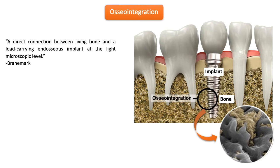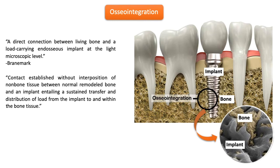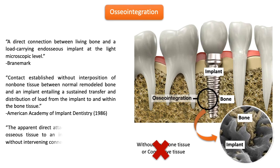Here you can see the light microscopic picture of integration between the bone and the implant. A key point is that this contact is established without interposition of non-bone tissue between the normal remodeled bone and the implant — meaning there is no soft tissue or connective tissue between the implant and the bone.